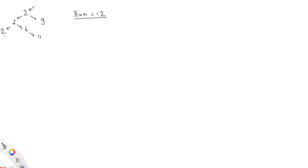Let me explain the problem in simple terms. From root to leaf we have three paths: one path is 2, 7, 2; another path is 2, 7, 6, 11; and another path is 2 and 9.